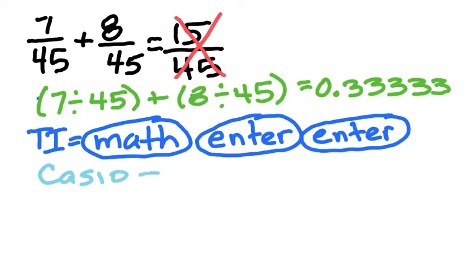So, math, enter, enter, and Casio is S double arrow D. So, if you do either one of these, you're going to end up with 1/3.